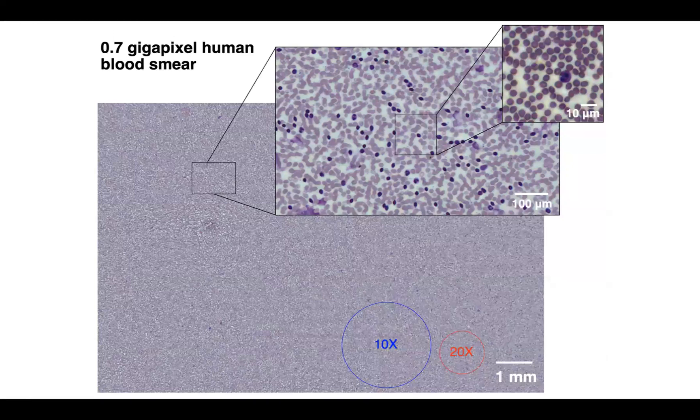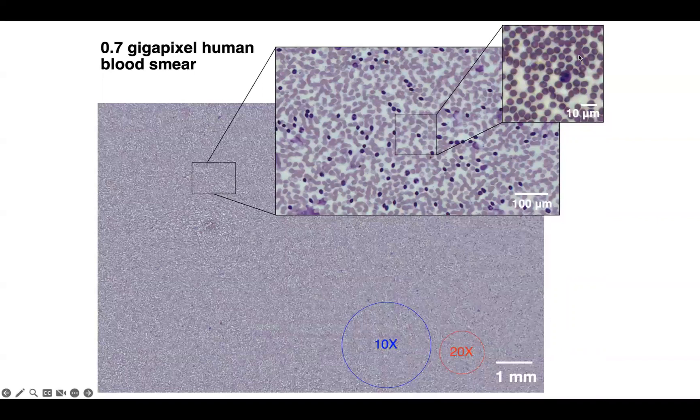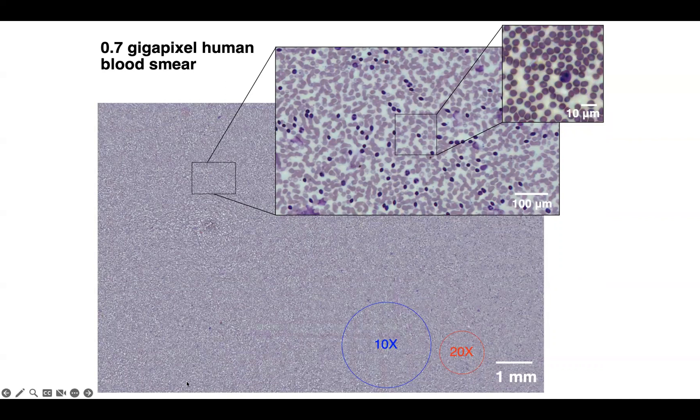It's hard to show gigapixel images in their entirety on megapixel screens but here's an example 0.7 gigapixel reconstruction of a human blood smear. We're zooming in to show more and more detail and the total field of view of this image is that of a 2x objective lens. So we're seeing millions and millions of cells. You'll note the size of the standard 10x objective lens field of view and a 20x are shown here. The resolution that we obtain in this example reconstruction is somewhere between a 10x and 20x objective lens.